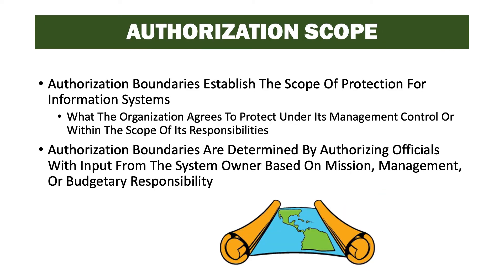Authorization boundaries establish a scope of protection for the information system — what the organization agrees to protect under its management controls or within the scope of its responsibilities. In this task, we define the bounds of the system and where controls will be implemented to protect the information and the information system. This is normally the span of control of the system owner, where they can influence change and apply controls.